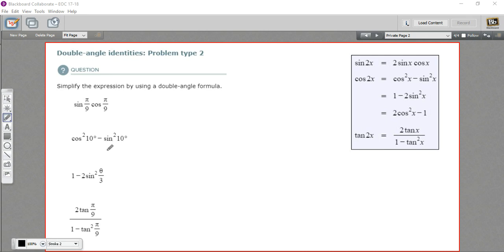The trick is to try to recognize them in these expressions. The first one is the sine of pi over 9 times the cosine of pi over 9. And the only one where we have sine times cosine is right here. It's not exactly what we have, though.